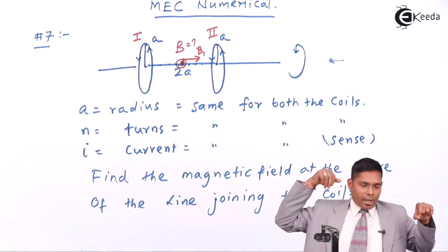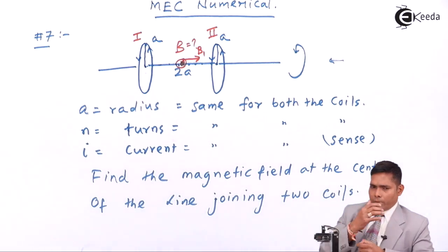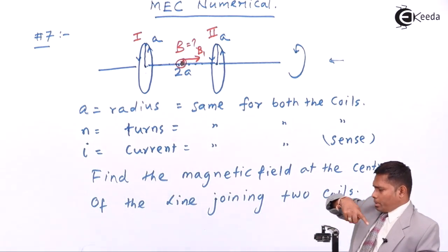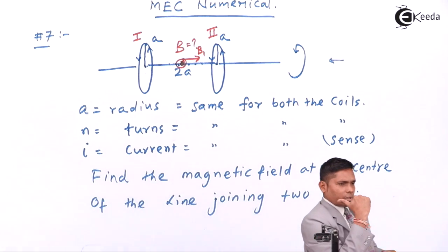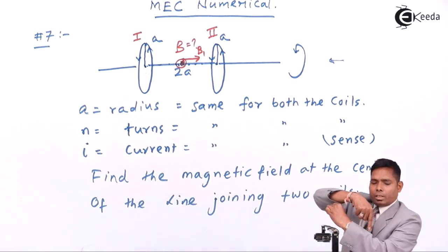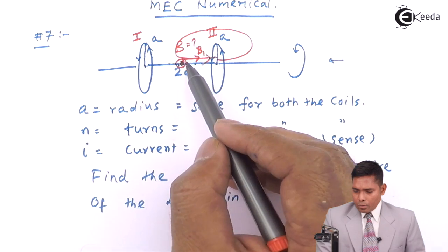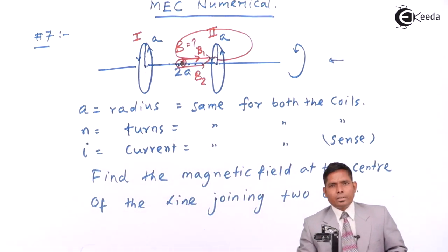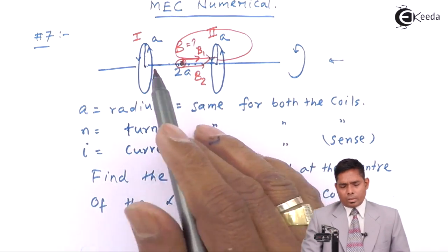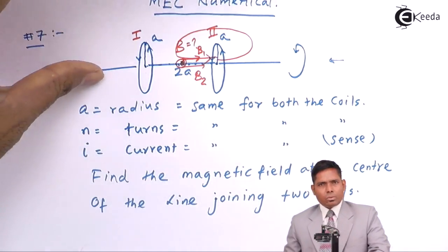The magnetic field from the first coil points from coil one toward coil two at the midpoint. For the point in between the two coils, the second coil's magnetic field also points in the same direction — it exits from one side and enters from the other. So both B1 and B2 are in the same direction at the midpoint, and you simply add them. The midpoint is at an axial position, not the center of either coil, so we use the axial position formula.